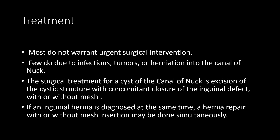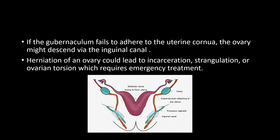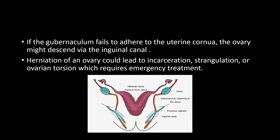If an inguinal hernia is diagnosed at the same time, a hernia repair with or without mesh insertion may be done simultaneously. In cases where the gubernaculum fails to adhere to the uterine cornua, the ovary might descend into the inguinal canal. Herniation of the ovary could lead to incarceration, strangulation, and ovarian torsion, which requires emergency treatment.